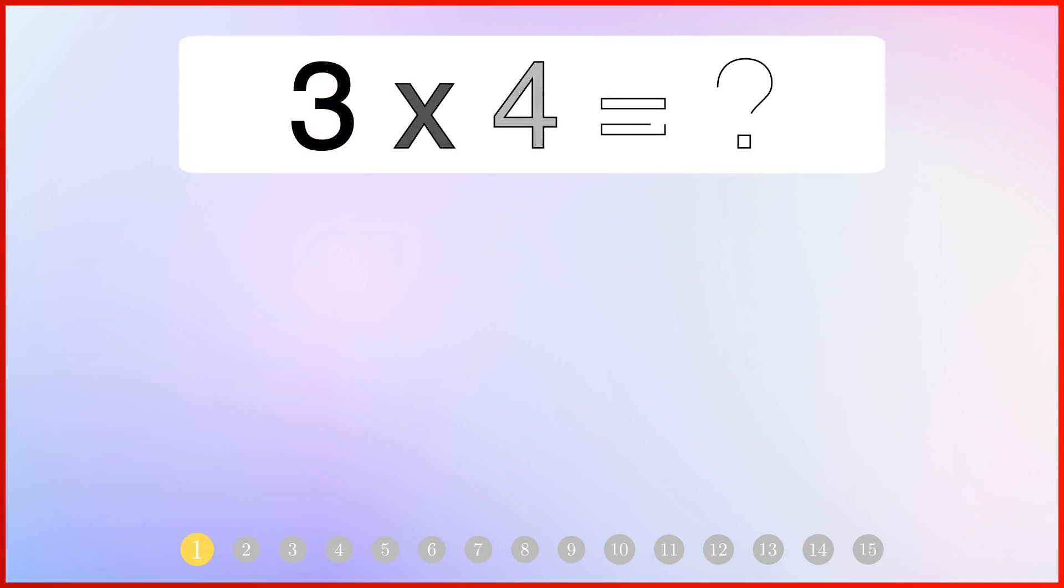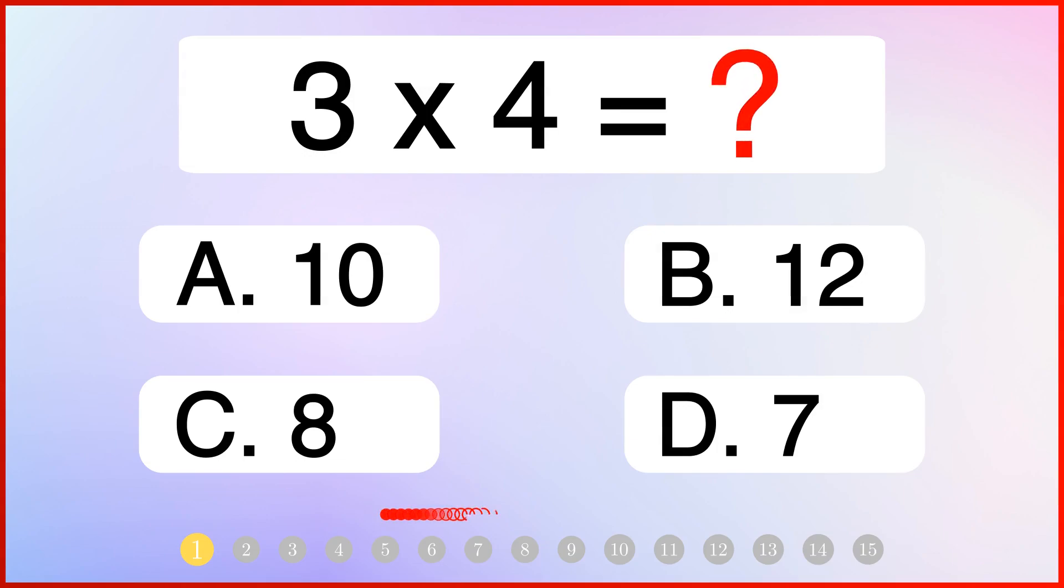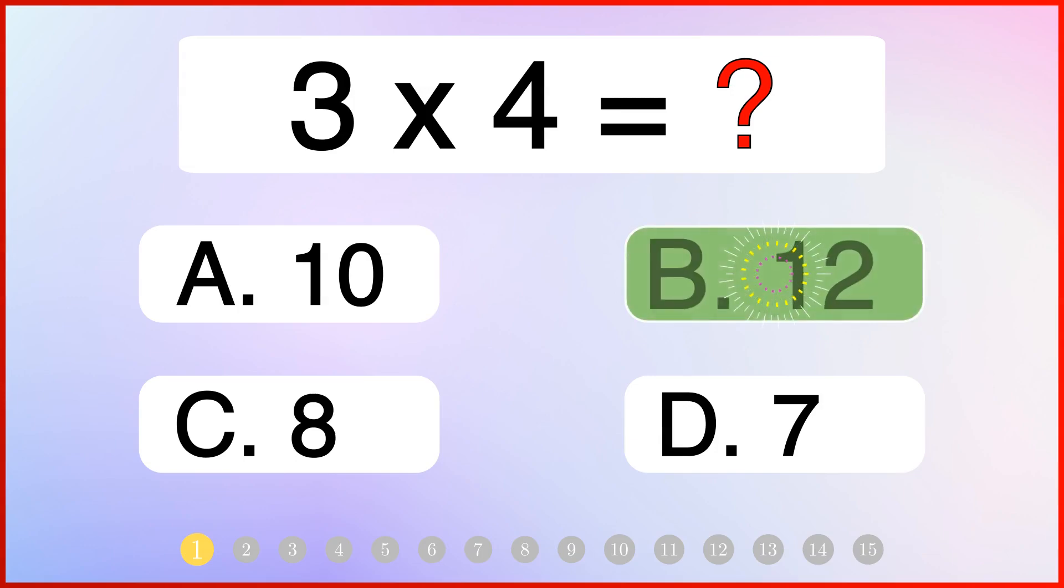What is 3 multiplied by 4? The correct answer is 12.